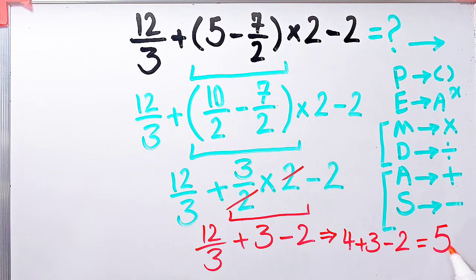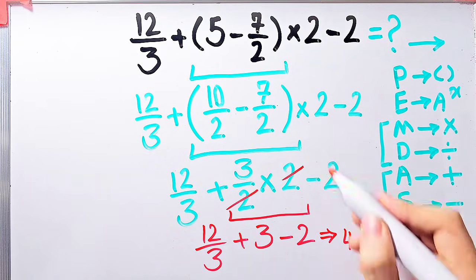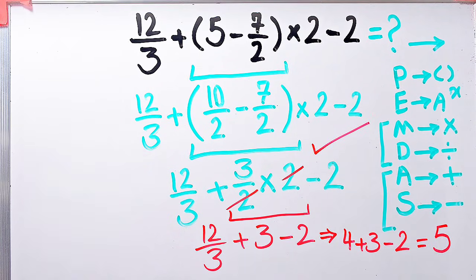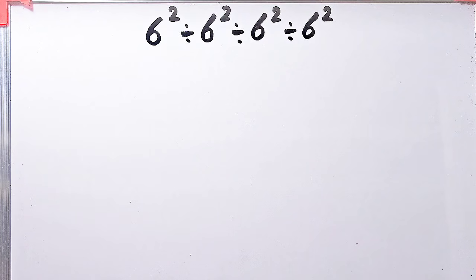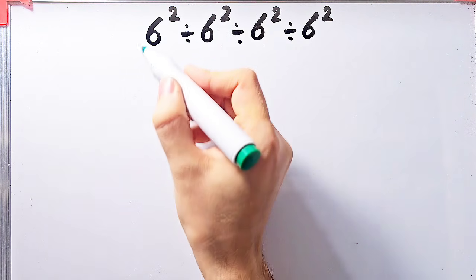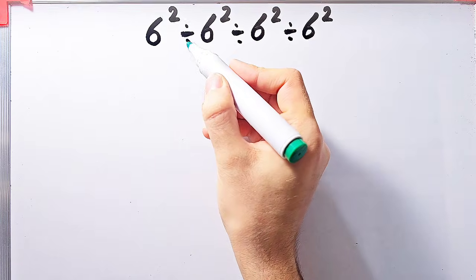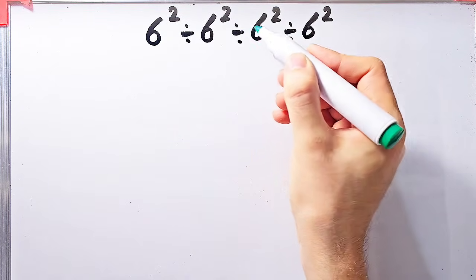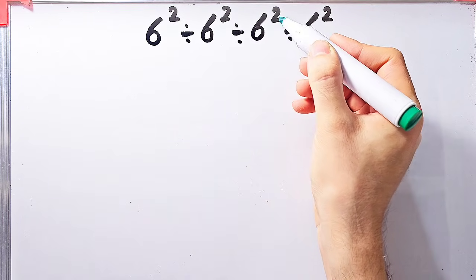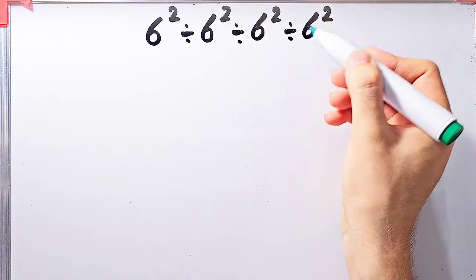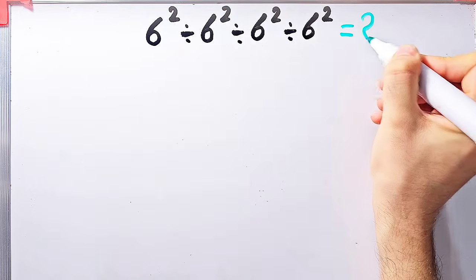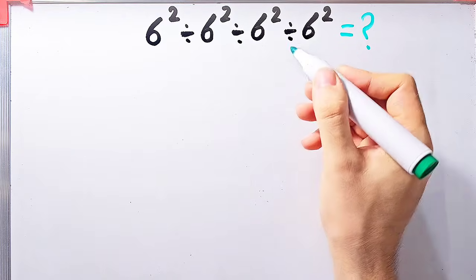If you're ready, let's solve another question about the PEMDAS rule. The question is: 6 to the power of 2 divided by 6 to the power of 2, divided by 6 to the power of 2, divided by 6 to the power of 2, then divided by 6 to the power of 2. What is the answer of this question?